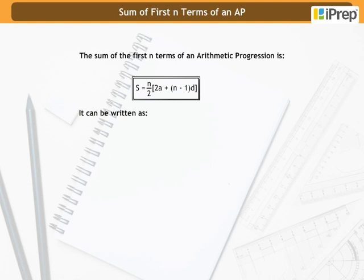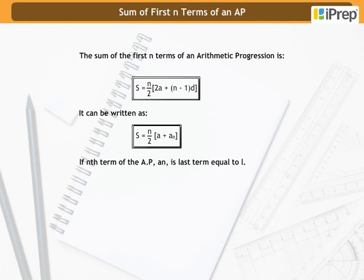It can be written as S equals n by 2 into A plus AN. If the nth term of the AP, AN, is the last term equals to L, then S equals n by 2 into A plus L.